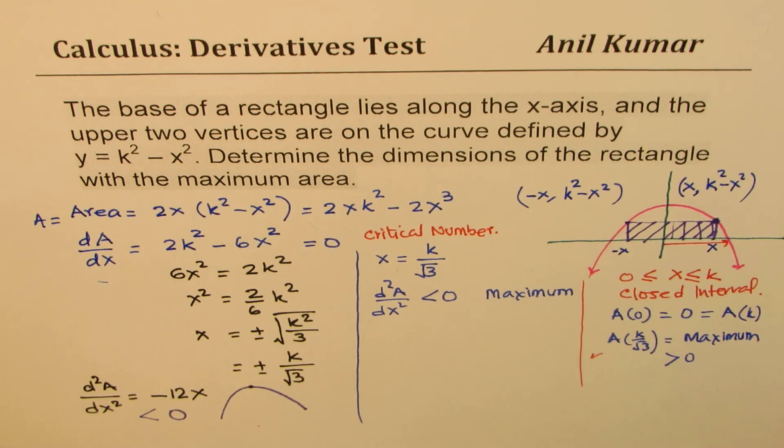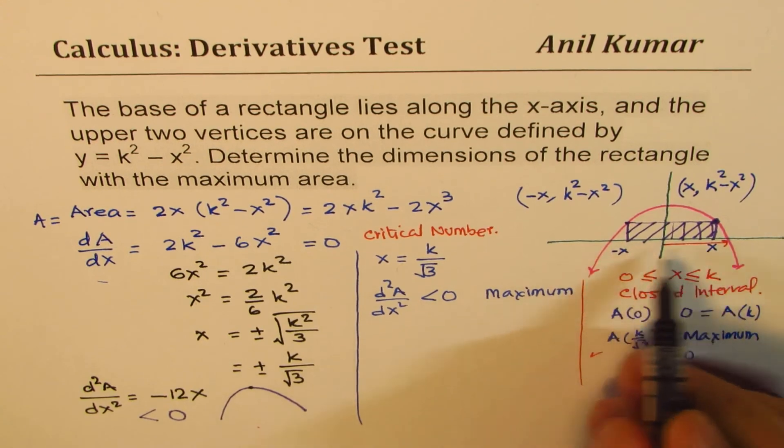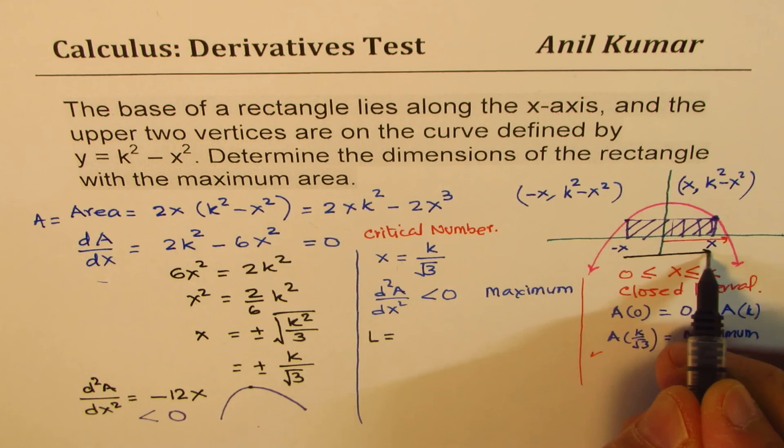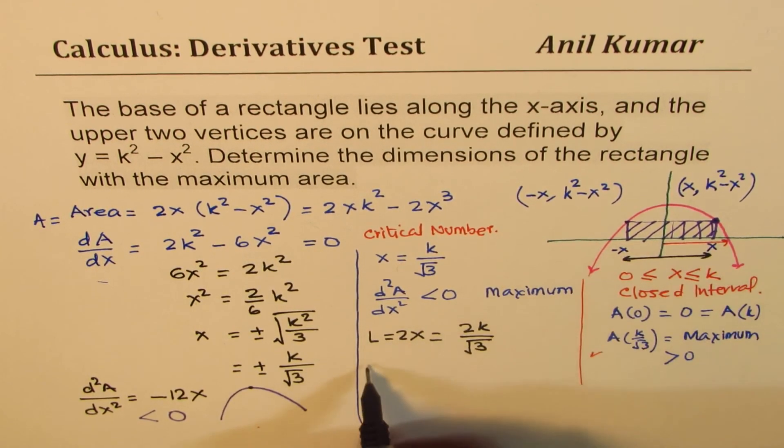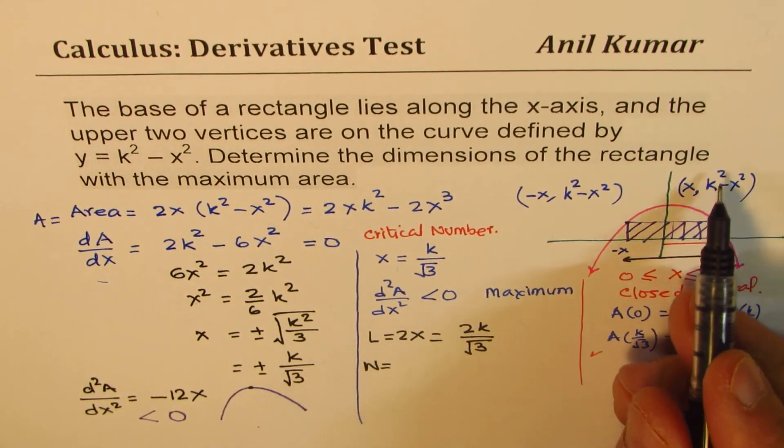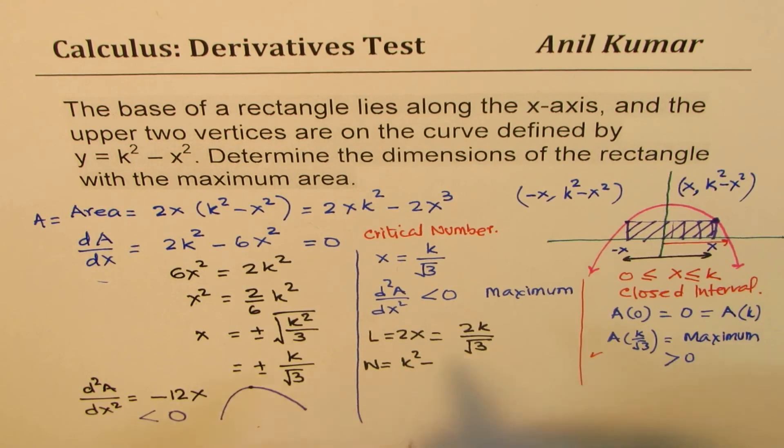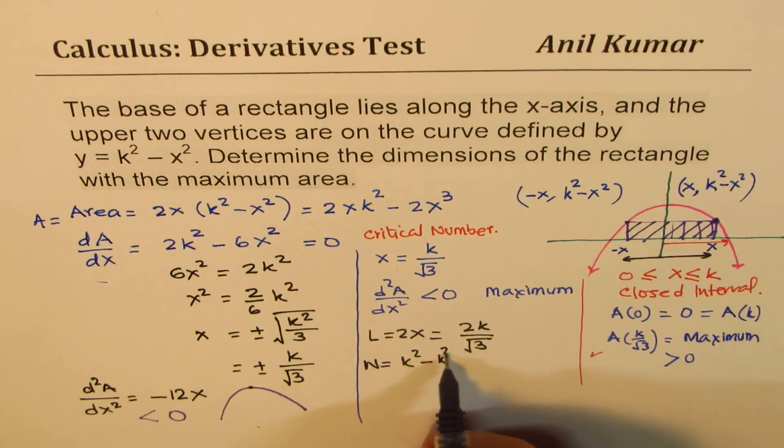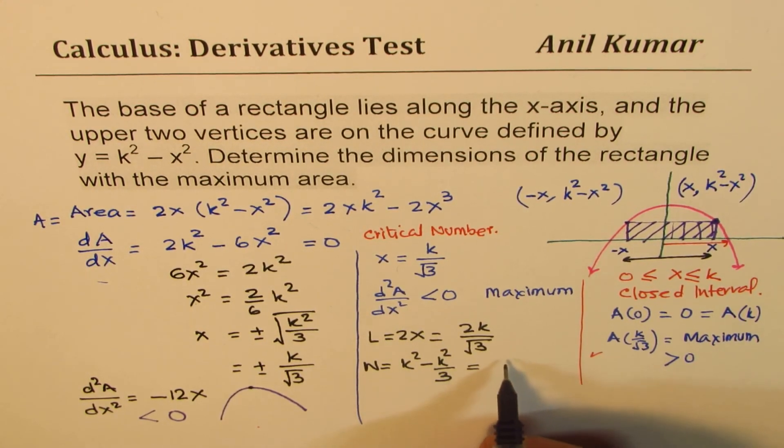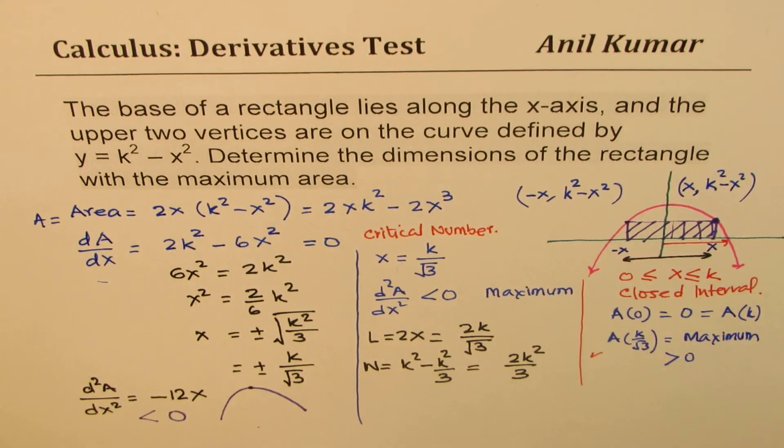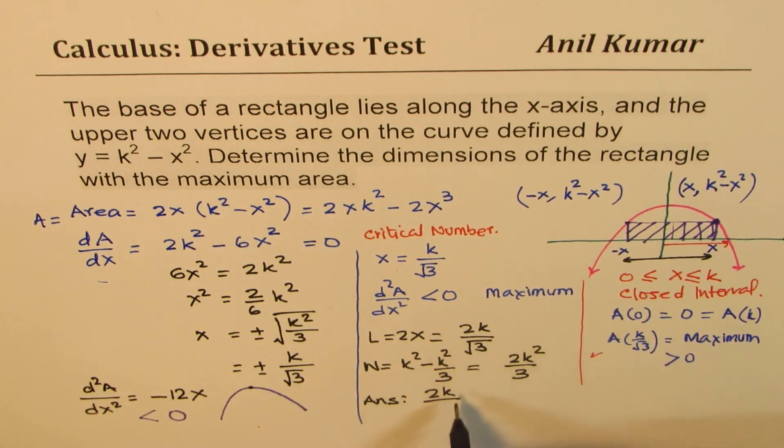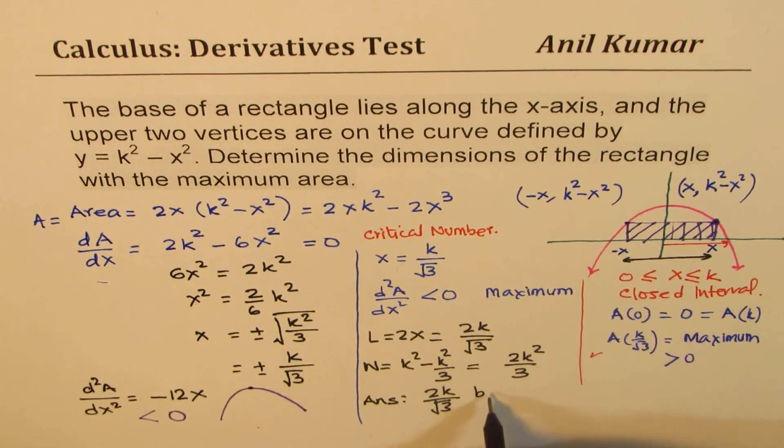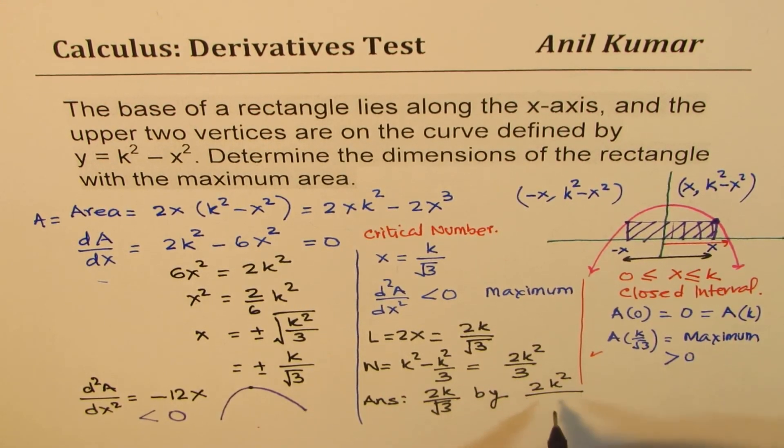It says, determine the dimensions of the rectangle with maximum area. Now whenever we say dimensions, we mean length and width. So length will be equal to this dimension, which is 2 times x. So that has to be 2k over square root 3. The width of this rectangle is going to be k square minus x square. So let me write this as k square minus k over square root 3. 3 minus 1 is 2. So we get 2k square over 3 as the width. And therefore, the answer is the dimensions are 2k over square root 3, which is the length, by 2k square over 3. Units, whatever units are.